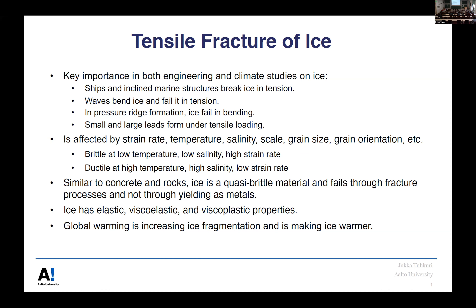The problem with fracture of ice is that, like many properties of ice, there are so many parameters that affect it: strain rate, temperature, salinity, size, grain size, grain orientation, and more. Simply put, ice is brittle at low temperature, low salinity, and high strain rate; and ductile at high temperature, high salinity, and low strain rate. But we don't know what 'high' and 'low' mean in each case, and these parameters are interrelated.